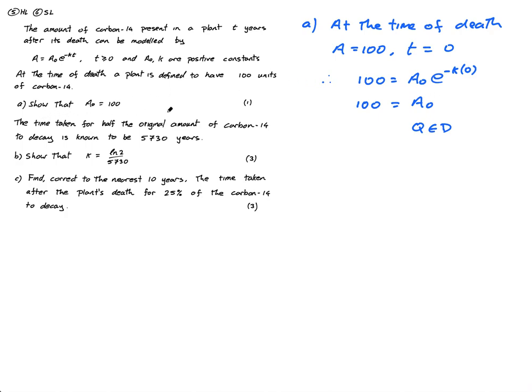Next question. The time taken for half the original amount of carbon-14 to decay is known to be 5,730 years. Show that K equals ln of 2 over this. Okay, so the time taken for half the original amount. If the original amount is 100, what is half the original amount? Half the original amount is obviously 50.